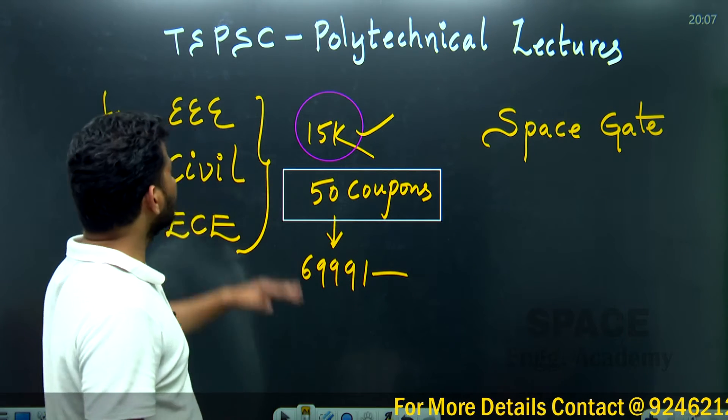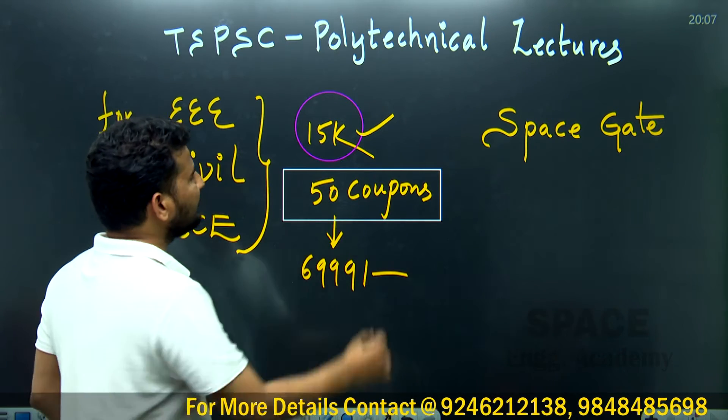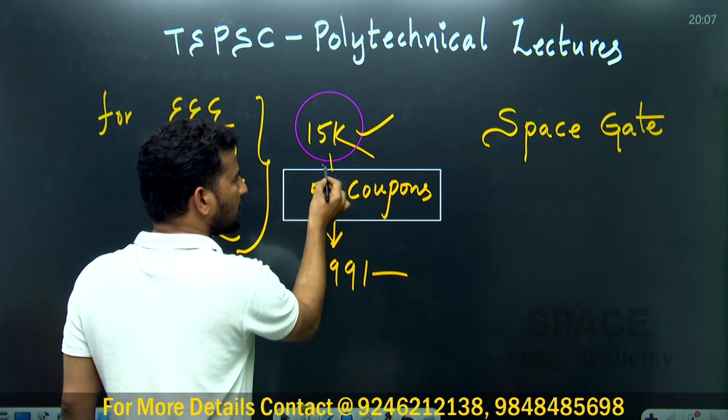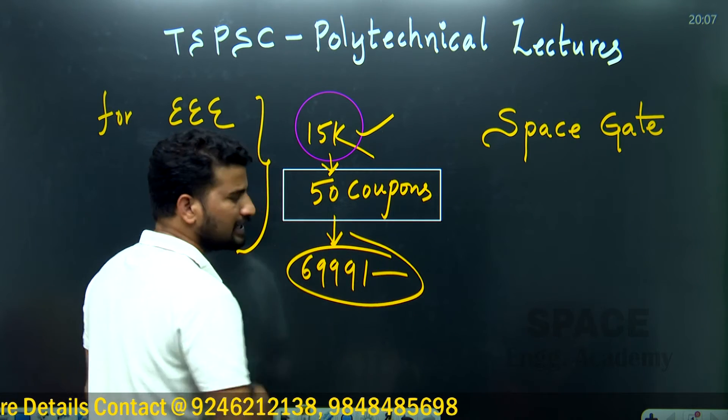The actual price is 15,000 rupees. We are providing Polytechnic lectures for EEE, Civil, and ECE. The entire course, by utilizing this coupon, you are going to get for only 6,999 rupees.